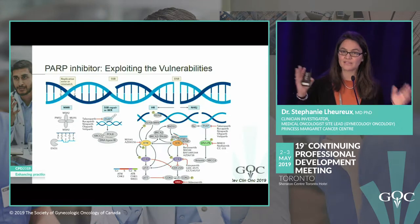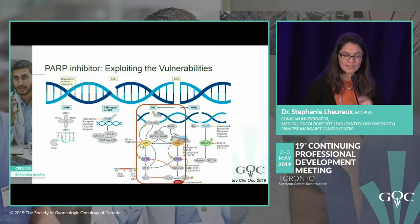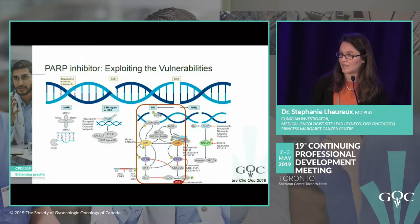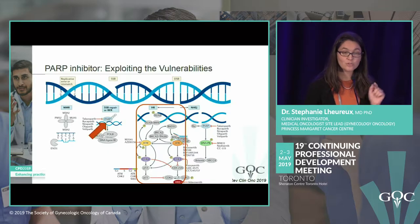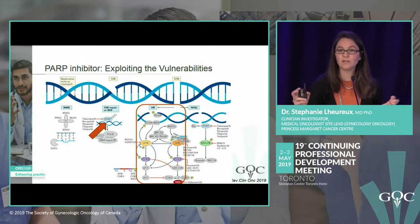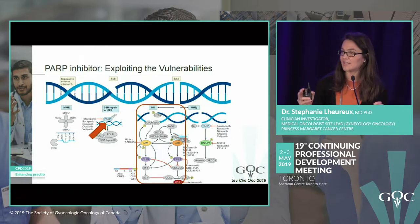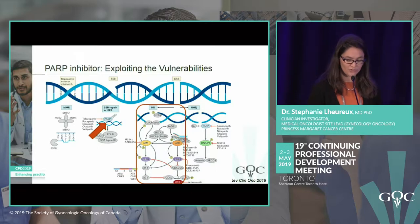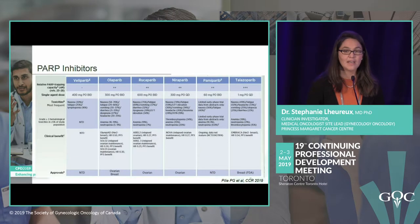In high-grade serous ovarian cancer, this DNA repair pathway is altered in 50% of cases. Knowing this, we can use PARP inhibitor treatment to simultaneously disable two DNA repair pathways so the cell cannot repair itself and will die. This is what we call synthetic lethality.